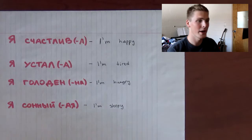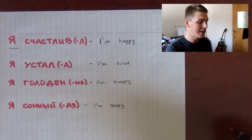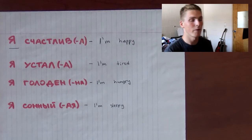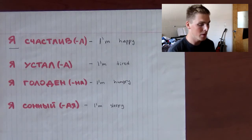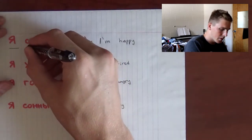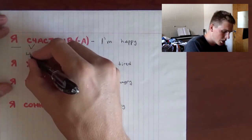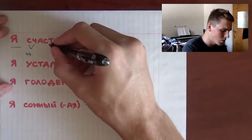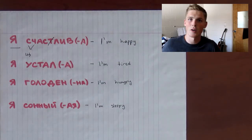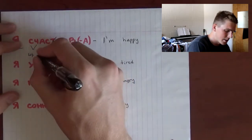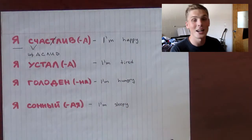Let's start with these four ones when we have Я as a subject. The first one is Я счастлив — that's for guys — and Я счастлива for ladies, and it means I am happy. The way we say this word is we combine these two sounds into one sound: Ш. And then we do not pronounce the letter Т — it is silent. We just say Счастлив.